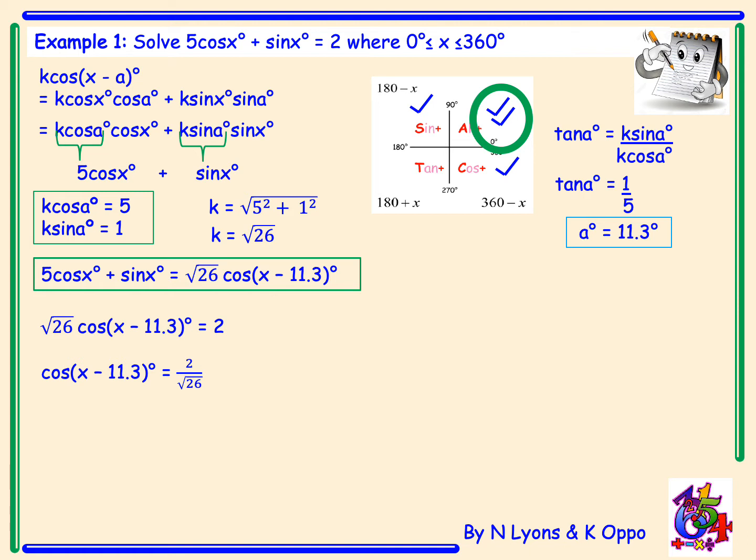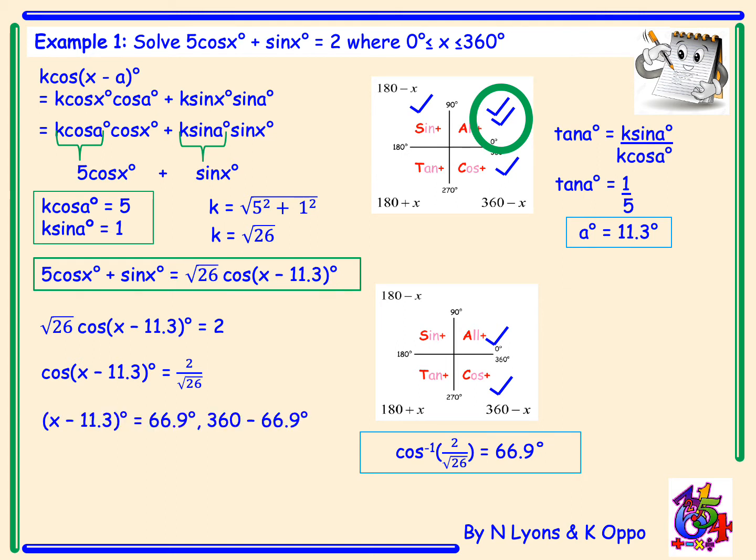Now to solve for x again I need to draw a cast diagram to see what I'm looking for angles. So cos is equal to positive 2 over root 26, so I'll be looking for angles in A and C. Next step is to do inverse cos of 2 over root 26 which gives an answer of 66.9 degrees. That will be the angle in A, but to get the angle in C I will need to take 66.9 degrees away from 360. This gives two angles: 66.9 degrees and 293.1 degrees.